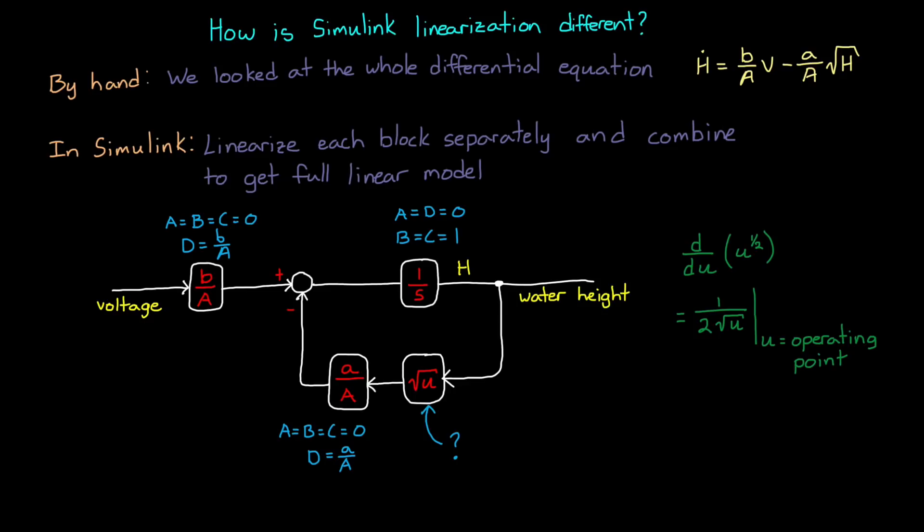Many of the nonlinear blocks within Simulink are assigned a Jacobian. It's hidden within the metadata of the block. And in the case of the square root function, the Jacobian is precisely the derivative of the function.